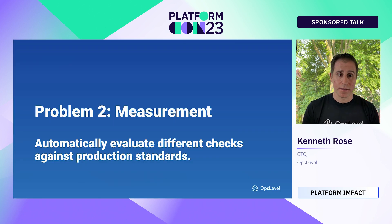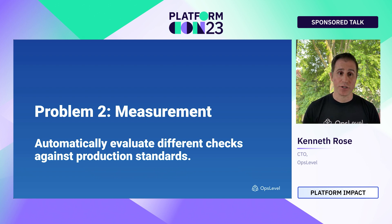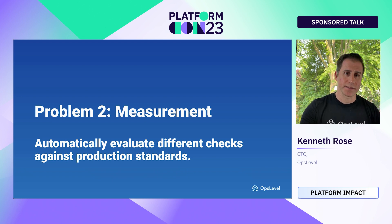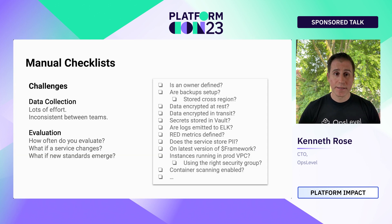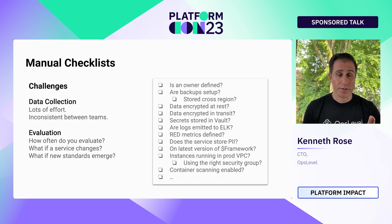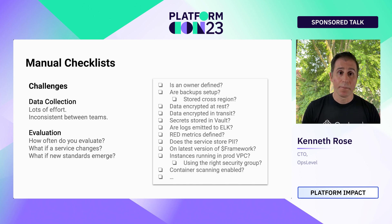Now let's talk about measurement. The measurement problem is how do you automatically evaluate different checks against production standards — how do you actually do production readiness? Similar to the spreadsheet we had for a service catalog, most people start with something like a manual checklist. That is fine as a starting point, but you will have challenges scaling that as your organization grows, and there are two primary challenges.